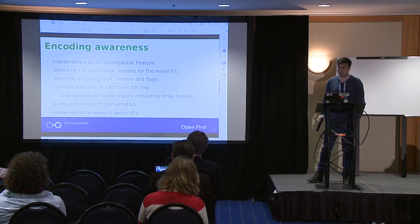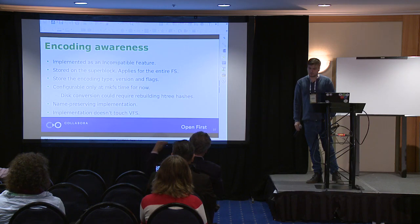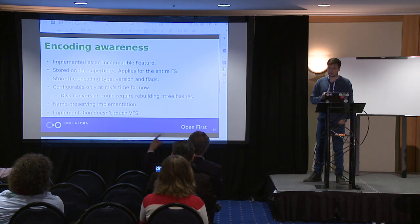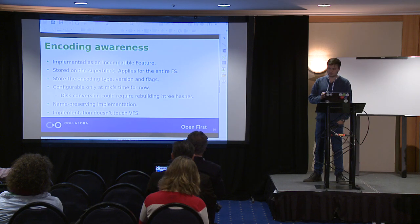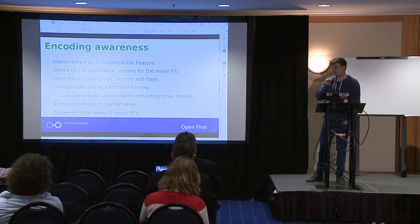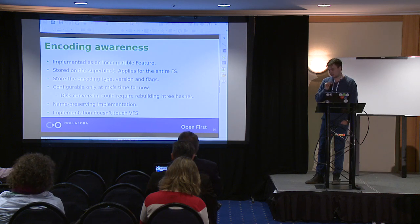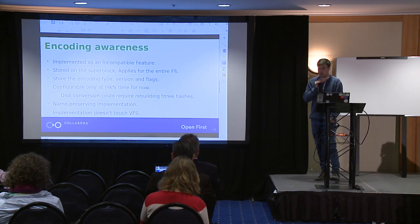A question: how do we ensure the encoding the user is using matches the encoding the file system is using? Because that's where we're going to get all the problems — like sharing one ext4 file system among many containers where each container is free to set their encoding to anything they want. How do we handle user space breakage?